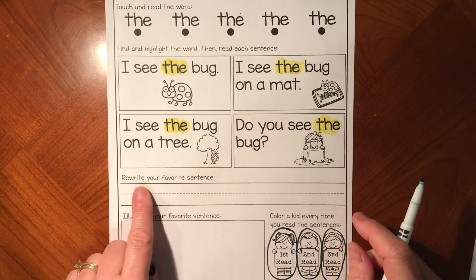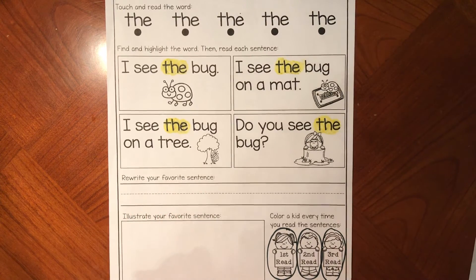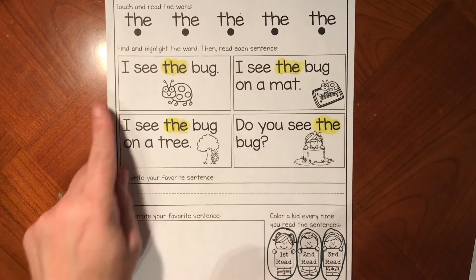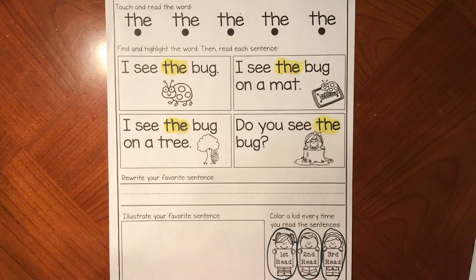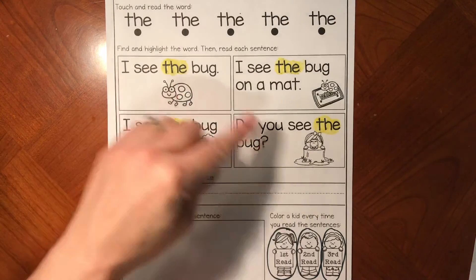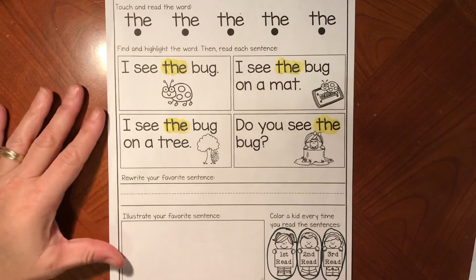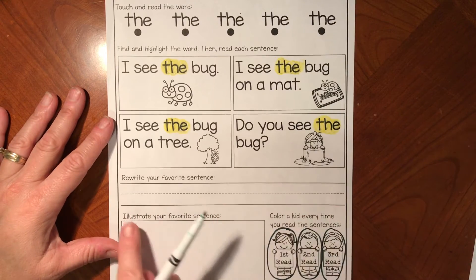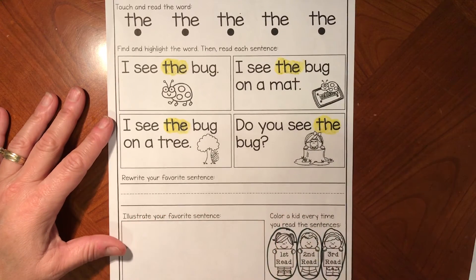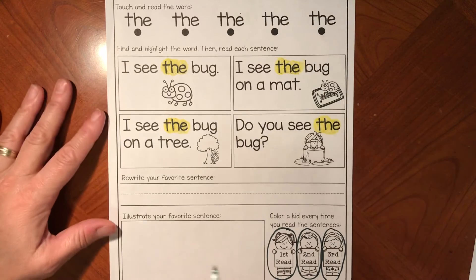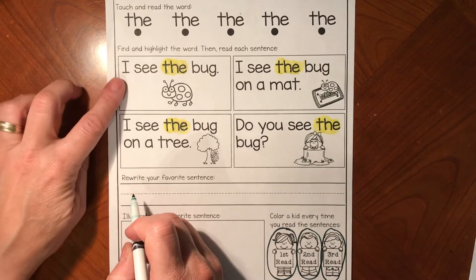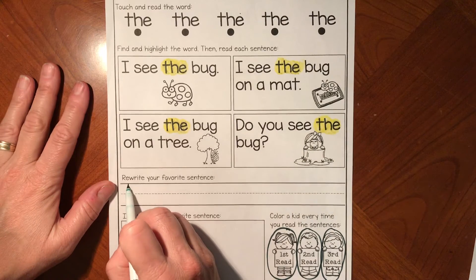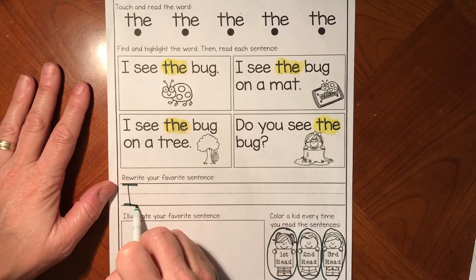Now it says to rewrite your favorite sentence. My favorite sentence was the simplest one: I see the bug. So I'm just going to write this short sentence. If you want to write one of the longer sentences, you can — and if you run out of room, you can write it underneath or on the back. I know I always start with a capital letter, and the word 'I' is always capitalized wherever it is.